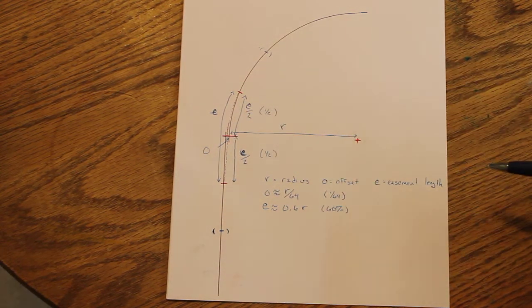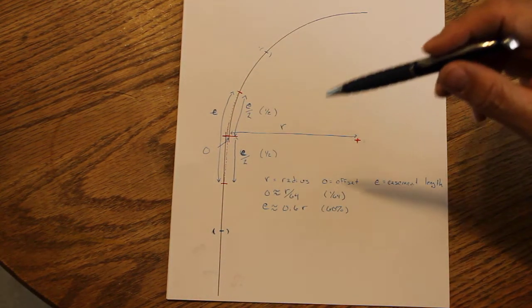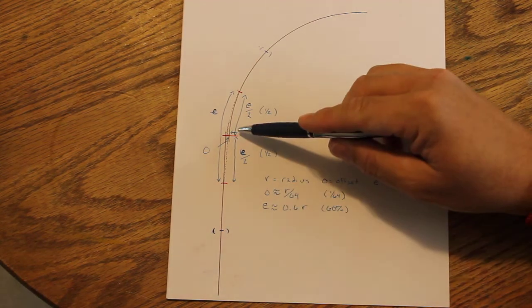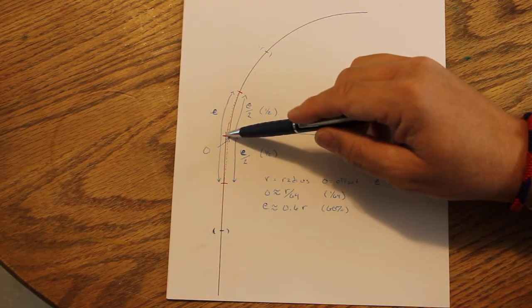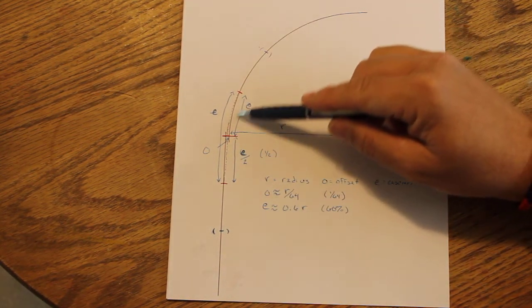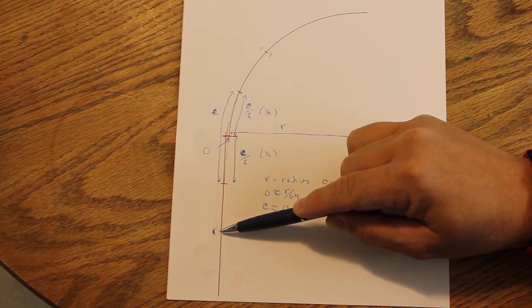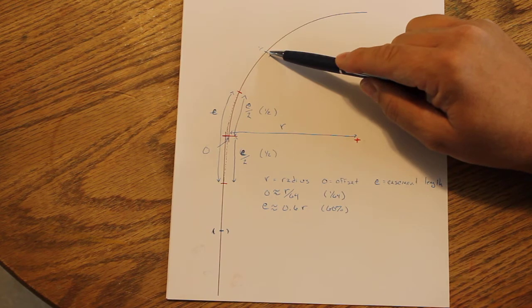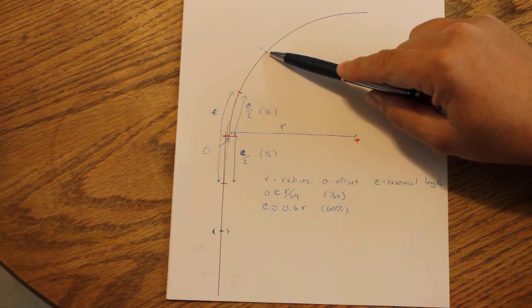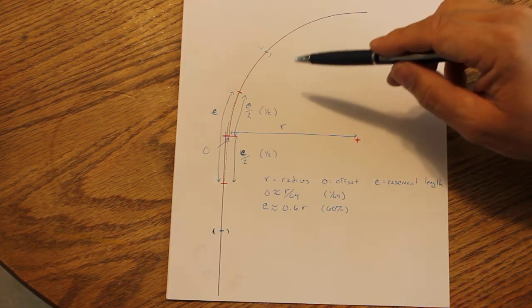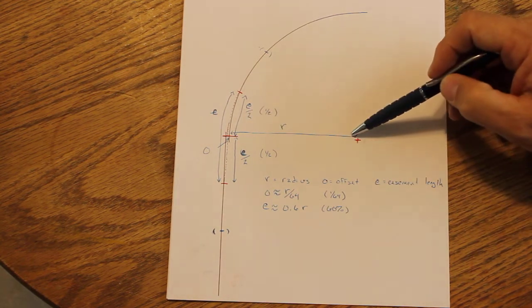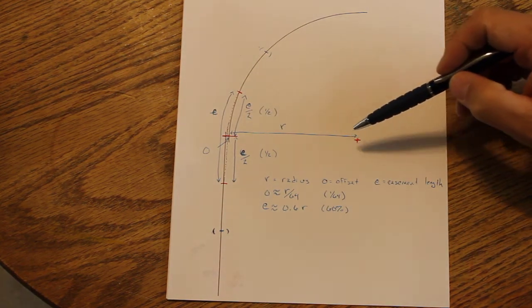You see the dotted line for the easement. What I told you in my video is that your easement length from the point at which your fixed radius curve would start to the point where you want to start your easement, both on the tangent side and on the curved side, would be 60% of your radius.